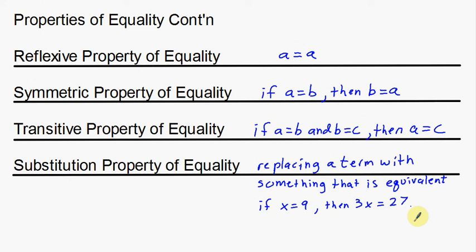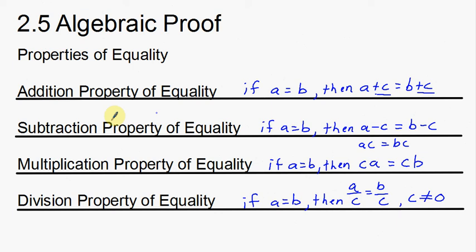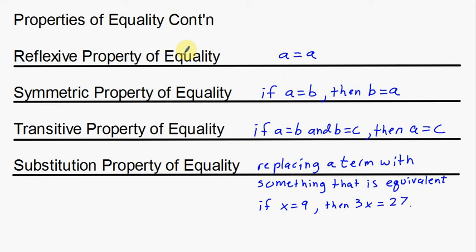Those are the properties of equality. We have the addition property of equality, subtraction property of equality, multiplication property of equality, and division property of equality. Then we have the reflexive property of equality, symmetric property of equality, transitive property of equality, and the substitution property of equality. Those are all the properties that you're going to be using and seeing either in your algebra level courses or your geometry level courses.